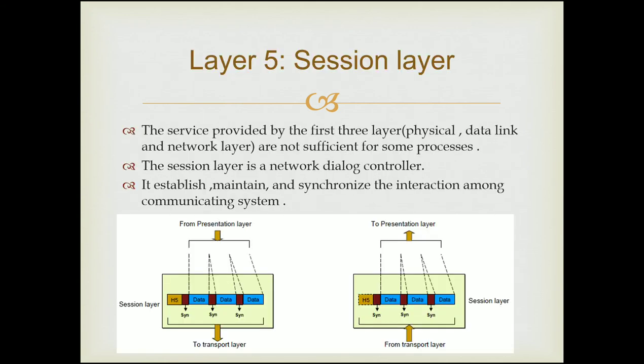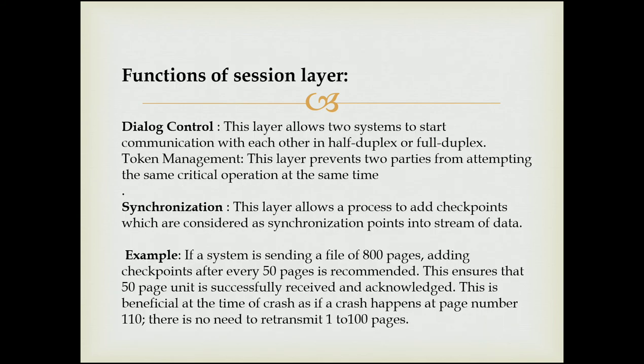The fifth layer is the Session layer. The services provided by the first three layers — Physical, Data Link, and Network — are not sufficient for some processes. The Session layer is the network dialogue controller to establish, maintain, and synchronize the interaction along the communication system. Its responsibilities include dialogue control and synchronization. Dialogue control: the Session layer allows two systems to enter into a dialogue and allows communication between two processes to take place in either half-duplex or full-duplex mode. Synchronization: the Session layer allows processes to add checkpoints or synchronization points to a stream of data.